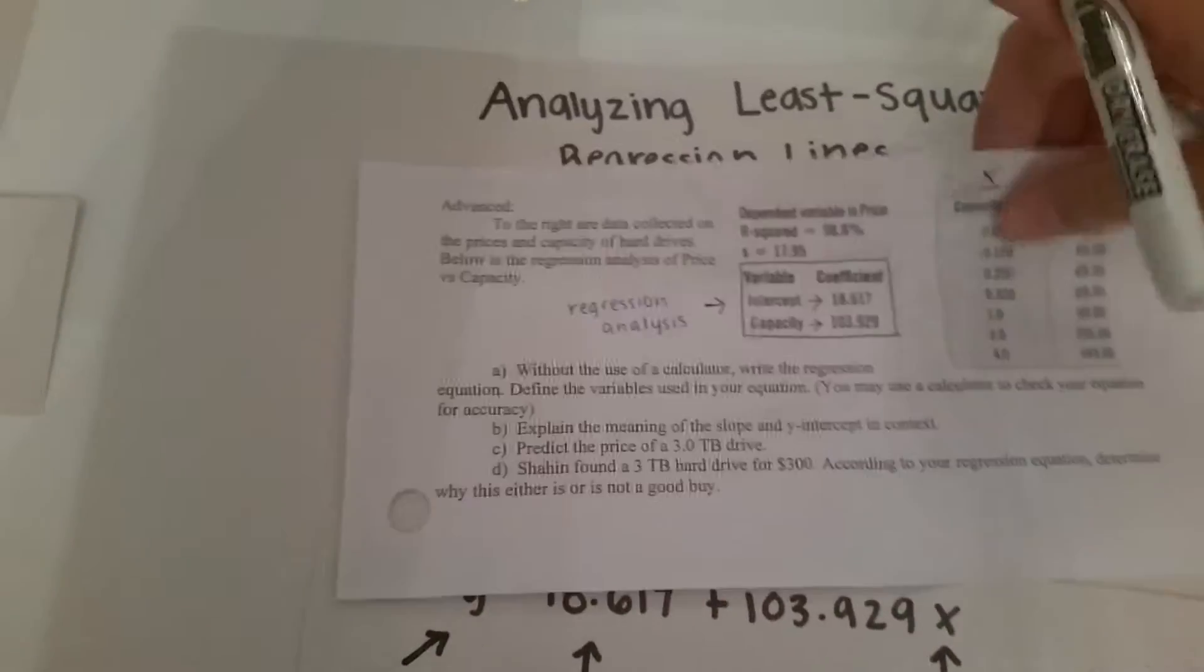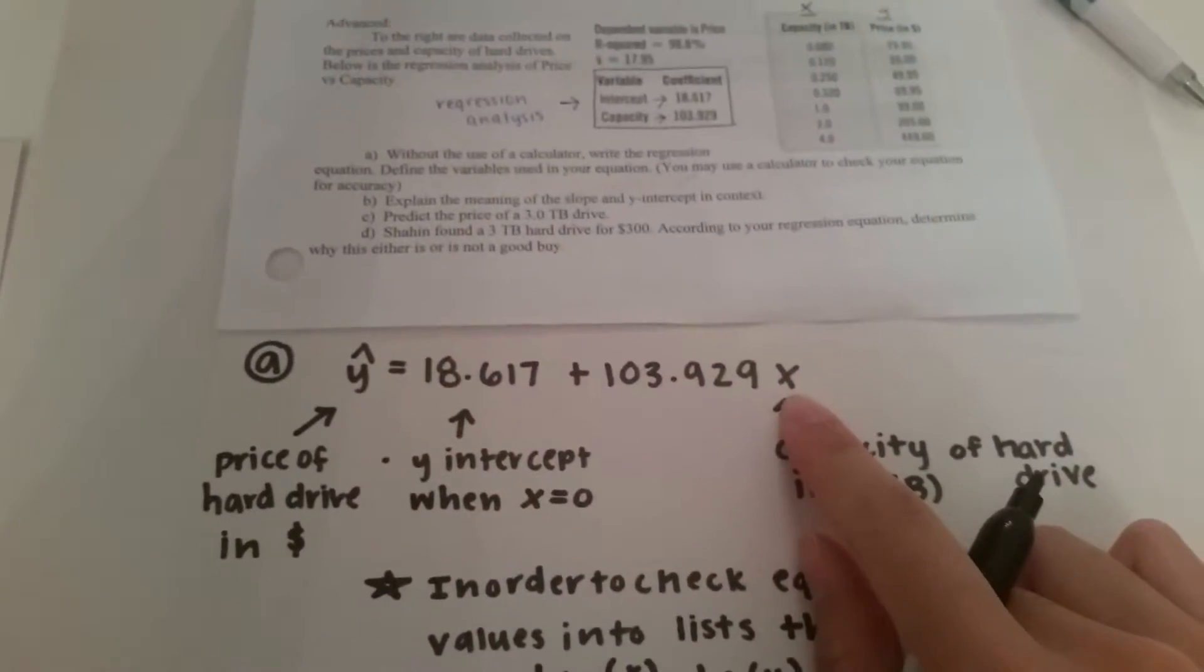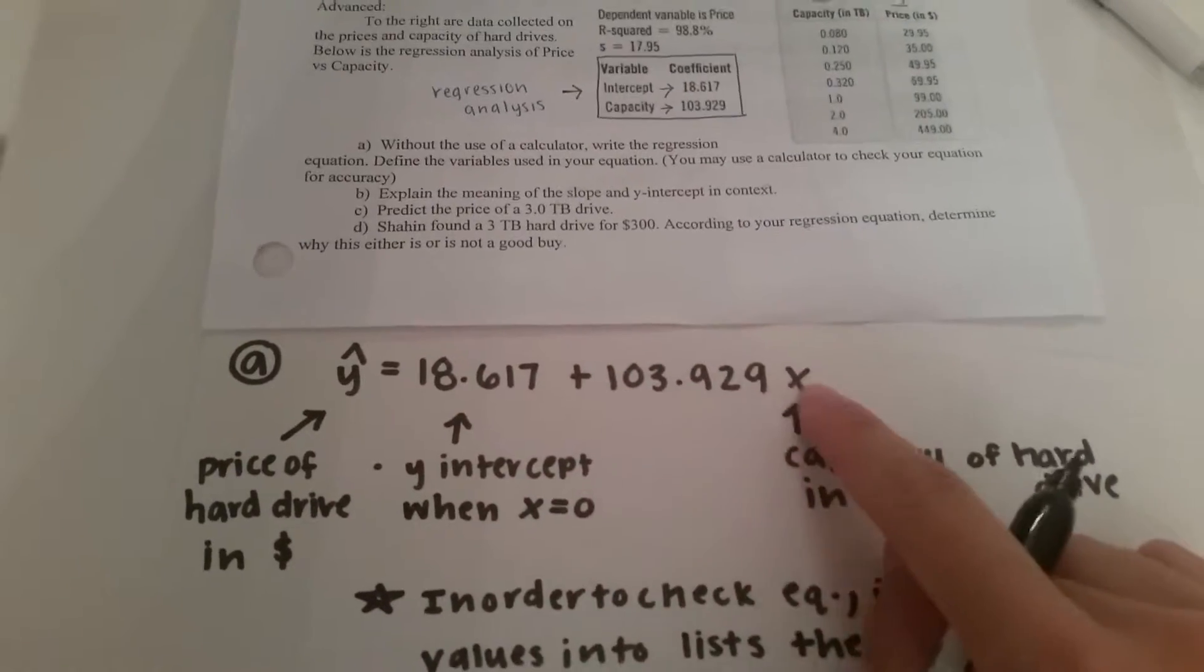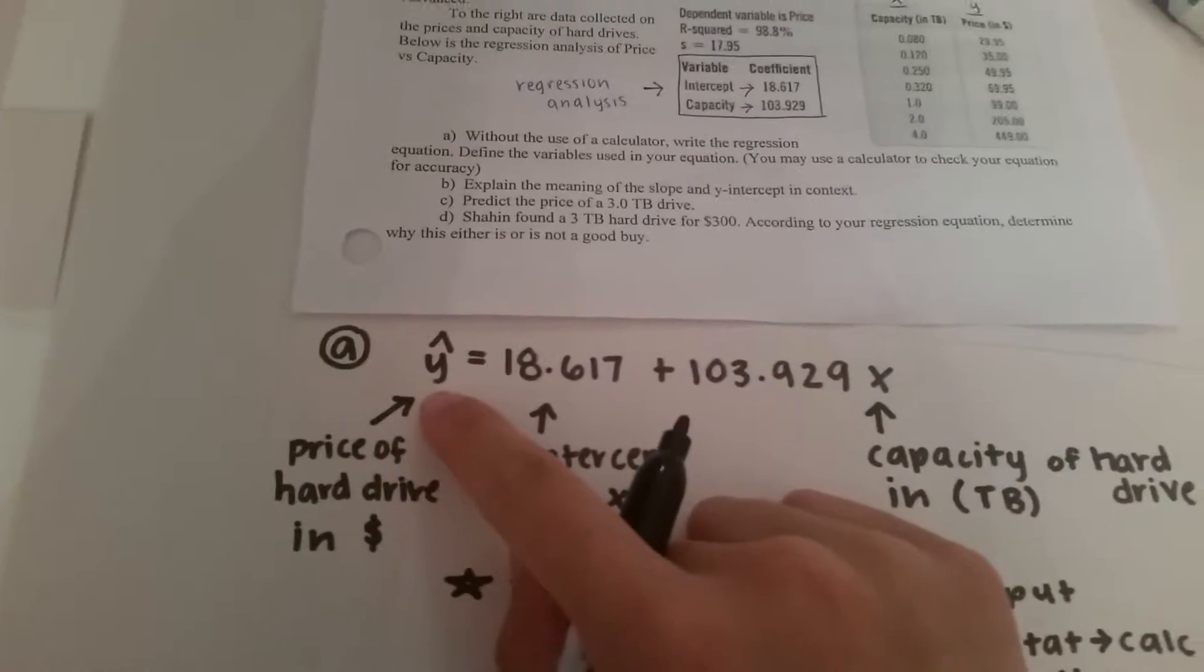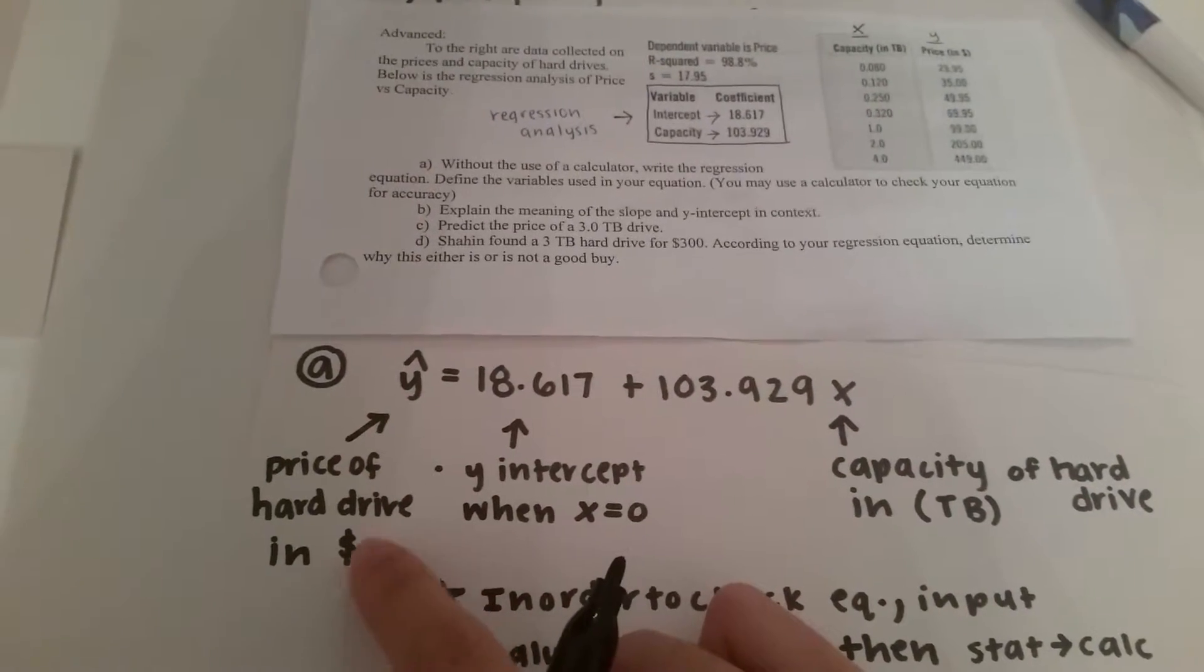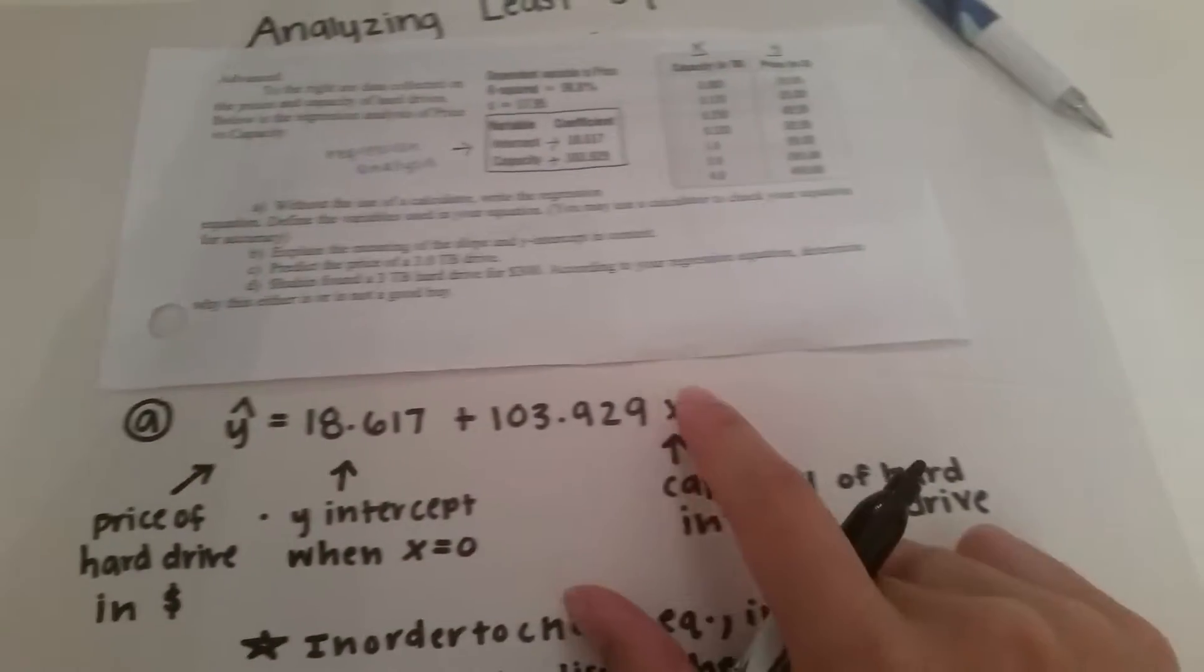Now plugging in the a and b values you get this equation right here. Now what do these variables actually mean though? Well y hat is the y value which is the price in dollars of the hard drives.